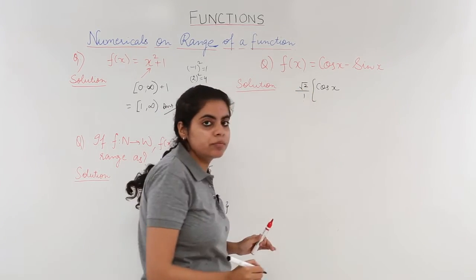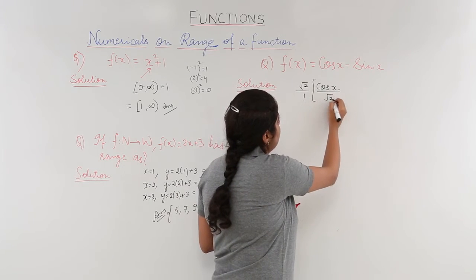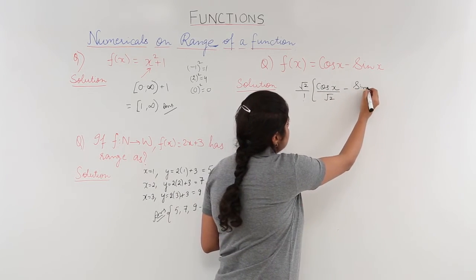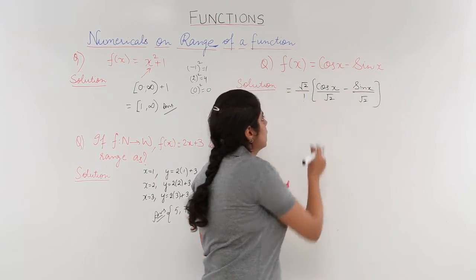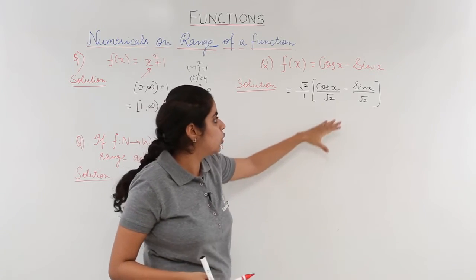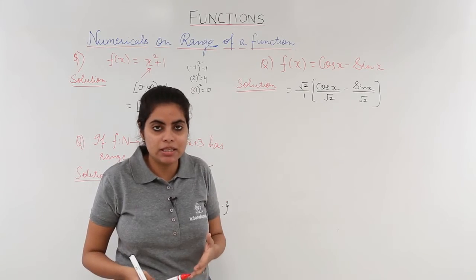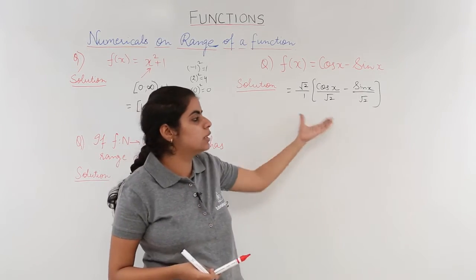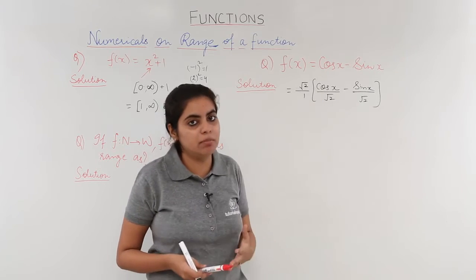You can either divide by root 2, or you can directly multiply by root 2 and divide in the bracket inside. So what do we do? We multiply by root 2 here and divide by root 2 in the bracket inside. So the question has changed to root 2 upon 1, or you can simply write root 2, cos x by root 2 minus sin x by root 2. Why have we done this? What is the reason that we are doing the manipulation? Because range cannot be found out directly in plain manner.